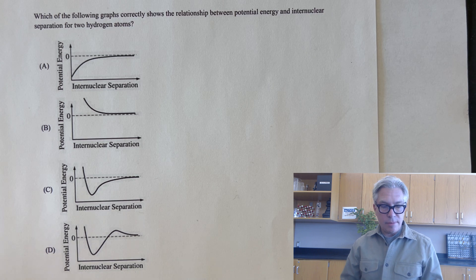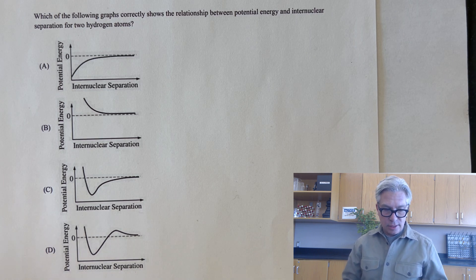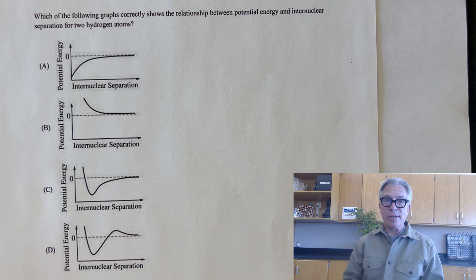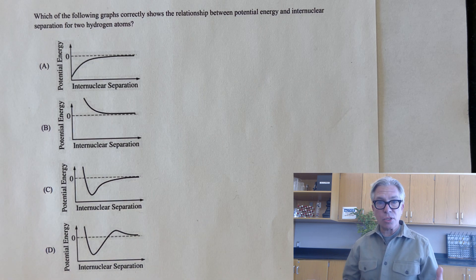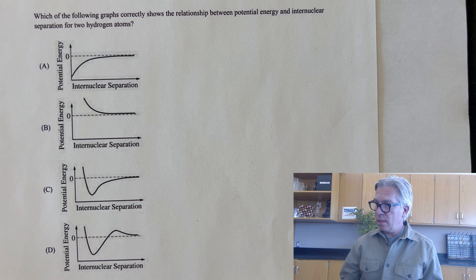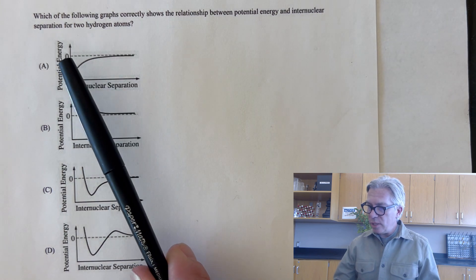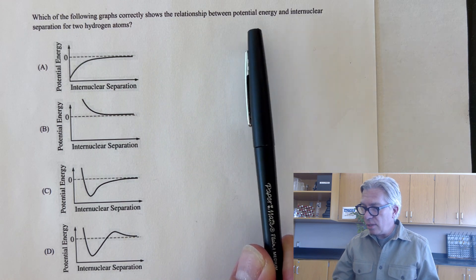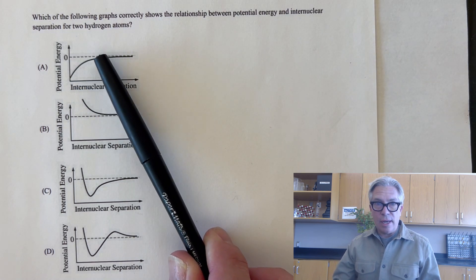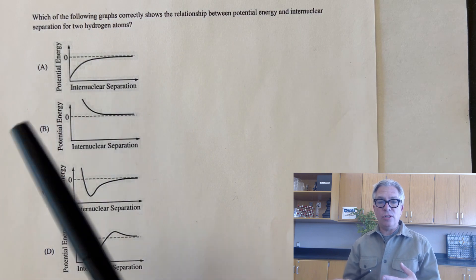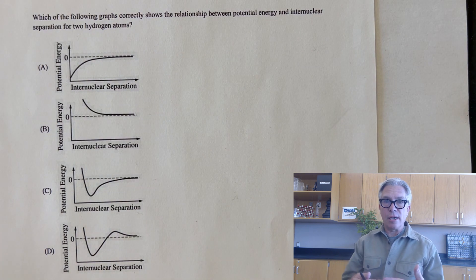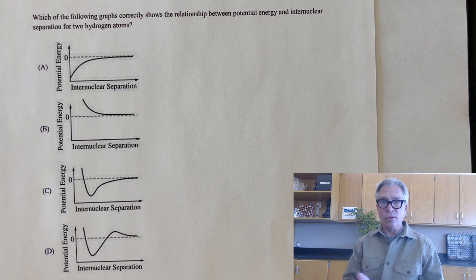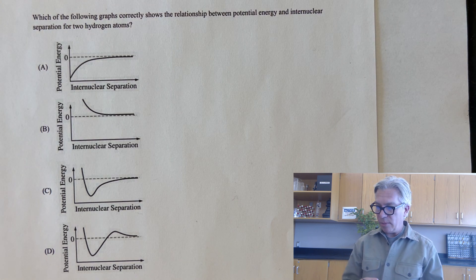And now let's take a short time and look at four questions in the style of AP chemistry questions that you might see in your AP chemistry travels. Starting with this one, this is a multiple choice question that says which of the following graphs correctly shows the relationship between potential energy and intranuclear separation for two hydrogen atoms. So again, we're back to the two hydrogen atoms who are forming a chemical bond, getting close enough to overlap their orbitals.